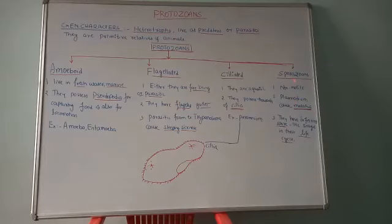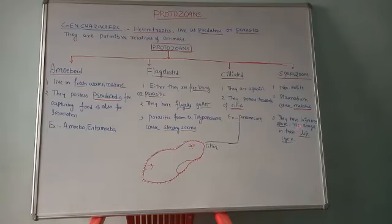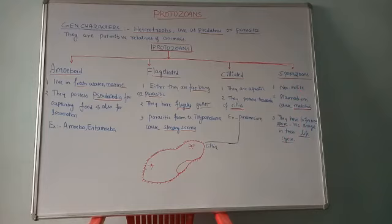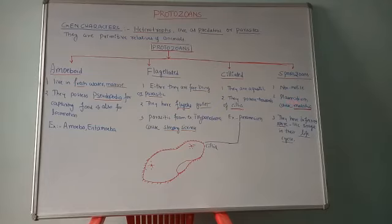Plasmodium vivax comes under sporozoans. In the life cycle of sporozoa, one infectious stage occurs involving the presence of a sporozoite — the infectious stage we encounter in the life cycle. With the help of the sporozoite stage, Plasmodium causes malaria. It is carried by a vector, the female Anopheles mosquito, which is the carrier of Plasmodium vivax — the causal organism of malaria. These are the four major groups under protozoa.